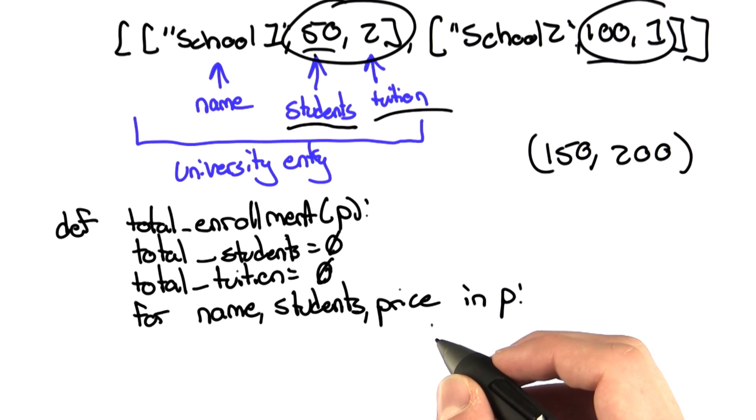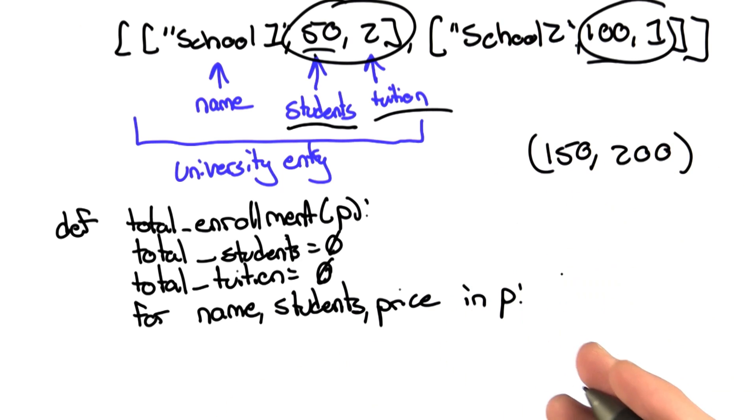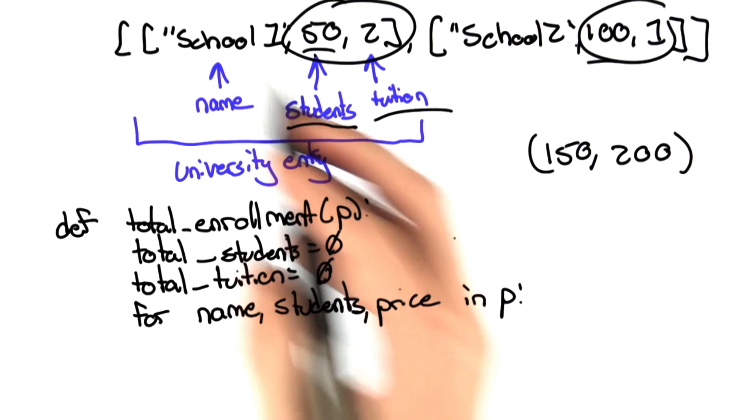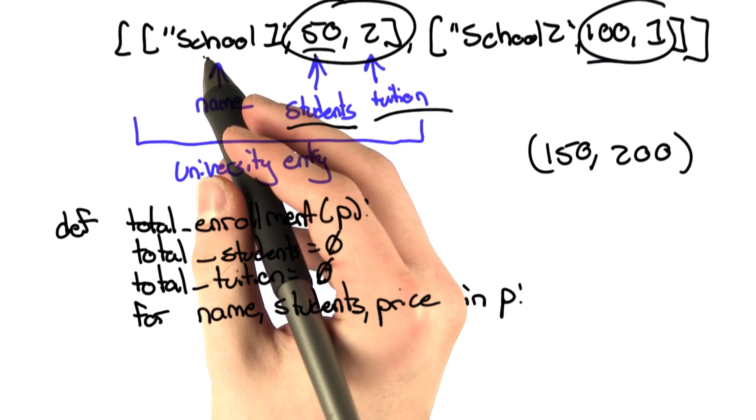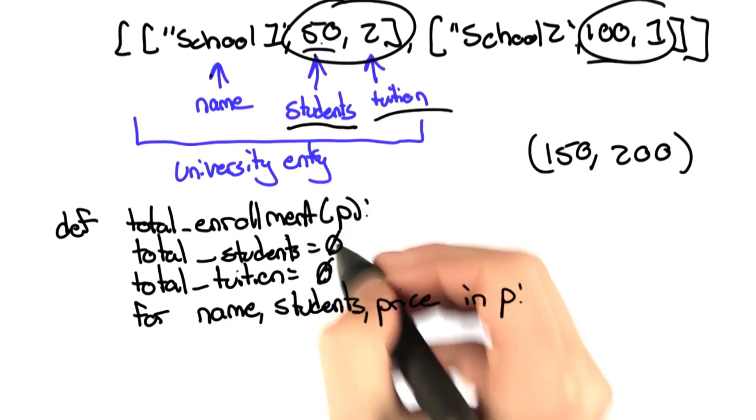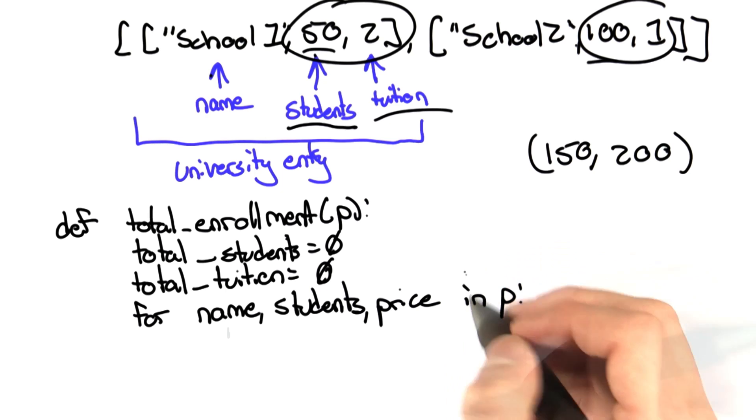I've added a little trick here to make the code a little shorter. This is a Python thing that you probably didn't know, but feel free to use it in the future. What I'm saying is that for each value in the list, I have the name, which is going to correspond to the first entry in the sublist. The students correspond to the second entry in the sublist, and price corresponds to the third entry in the sublist.